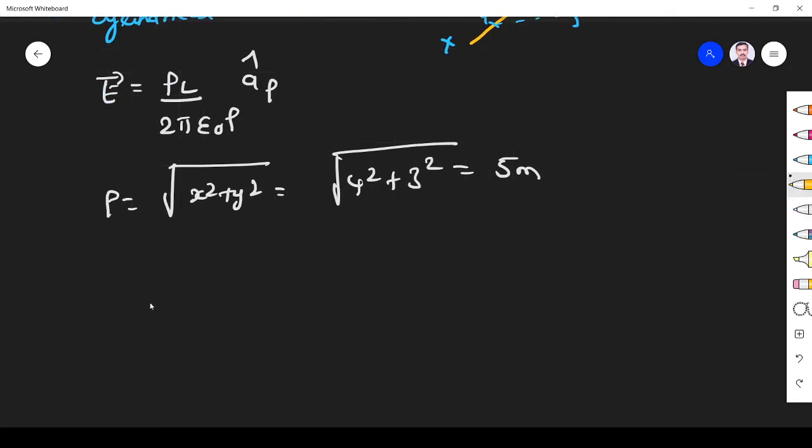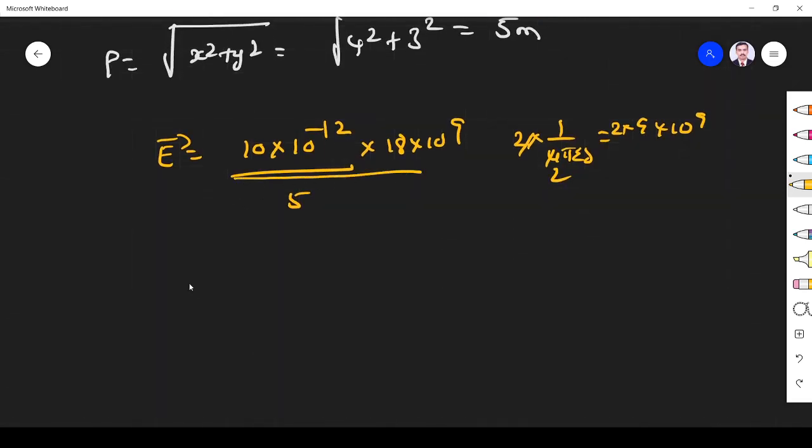Now we can substitute into the formula. E = (10×10^-12)/(5) × (1/(2ε₀)). Since 1/(4πε₀) = 9×10^9, then 1/(2ε₀) = 18×10^9. This gives E = (180/5)×10^-3 aρ = 36 millivolts per meter aρ.